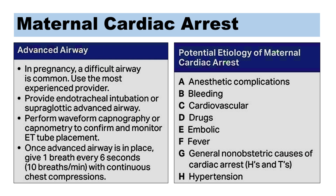Advanced airway for in-hospital cardiac arrest in pregnancy: In pregnancy, a difficult airway is common. Use the most experienced provider. Provide endotracheal intubation or supraglottic advanced airway. Perform waveform capnography or capnometry to confirm and monitor endotracheal tube placement. Once an advanced airway is in place, give one breath every 6 seconds — that is 10 breaths per minute — with continuous chest compressions.